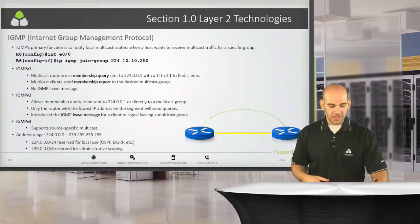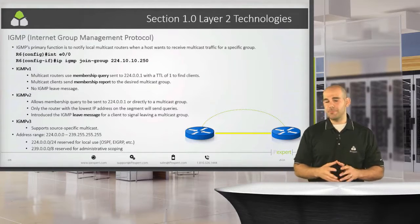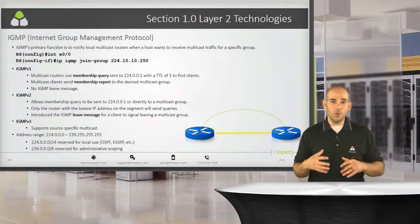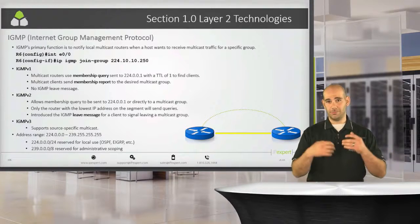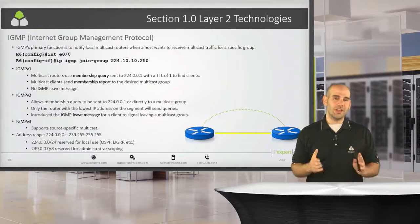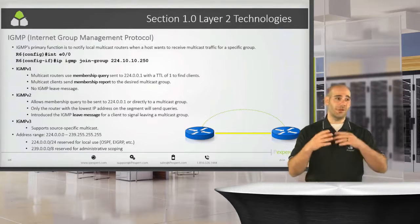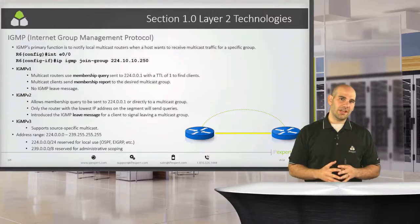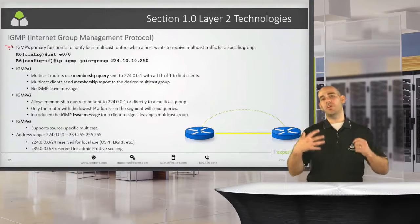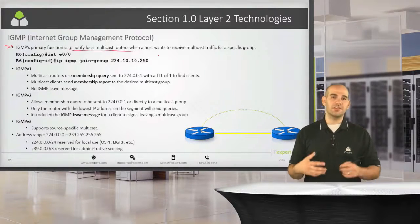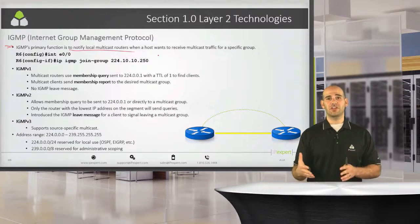Let's go ahead and jump into IGMP. As it relates to your CCIE version 5 lab exam, if you're asked to implement multicast — which you most likely are going to be because multicast is everywhere today in 2015 — you're not going to have a physical host. The primary function of IGMP is to notify the local multicast routers that you are interested in receiving traffic on a particular multicast group.